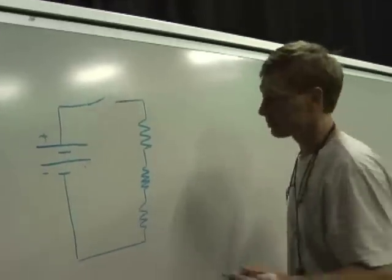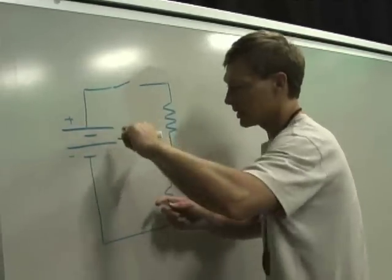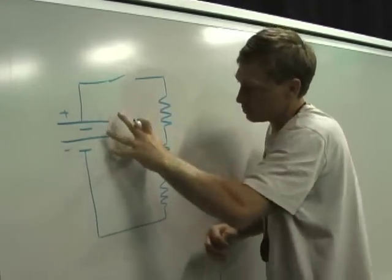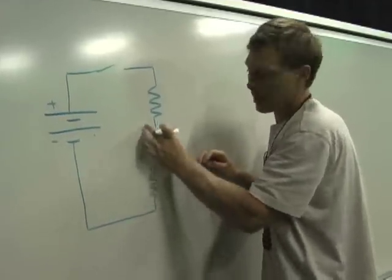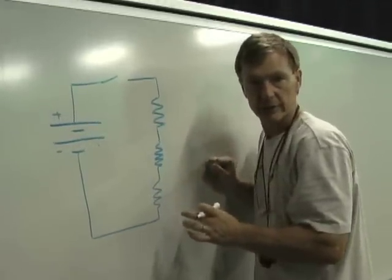Now, notice there's only one path. As the electrons move, as I close this switch and the electrons move counterclockwise, you're going to encounter all three resistors. It's a big gauntlet.